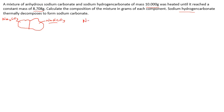Let's work out the equation for this decomposition. We've got sodium hydrogen carbonate, and the equation tells us it decomposes to form sodium carbonate. We also need to account for the carbonate decomposing to carbon dioxide, plus the hydrogens and extra oxygen, which gives us water as well. To balance it we put a 2 in front of NaHCO₃, giving: 2NaHCO₃ → Na₂CO₃ + CO₂ + H₂O. Check that it balances.